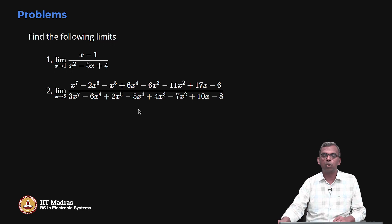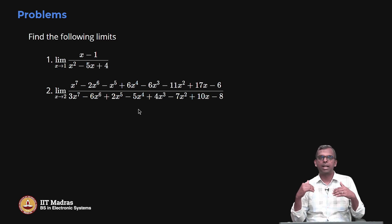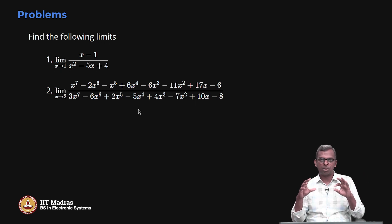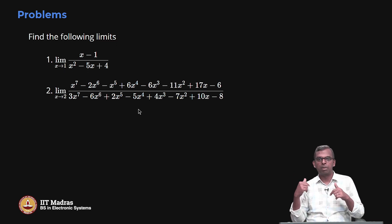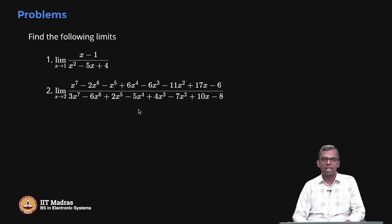So, to summarize L'Hôpital's Rule: if you have a limit for a ratio f(x) by g(x) and you have a 0 by 0 or infinity by infinity type indeterminate form, and if the conditions are satisfied — f and g are differentiable, g' is not 0 except at the limit point — then you can move to the derivatives f' by g' and evaluate the limit there. In many cases it will be simpler and you will get the answer very easily. Thank you very much.